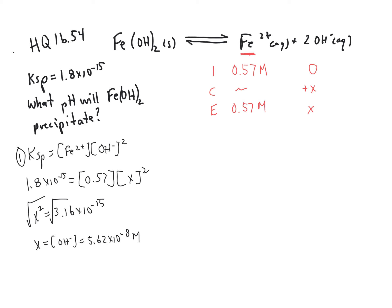Now we know our hydroxide concentration. Now we can find our pH of this solution. So step 2, pOH is the negative log of our hydroxide concentration. pOH equals the negative log of 5.62 times 10 to the minus 8 molar. So the pOH of this solution comes out to be approximately 7.25.